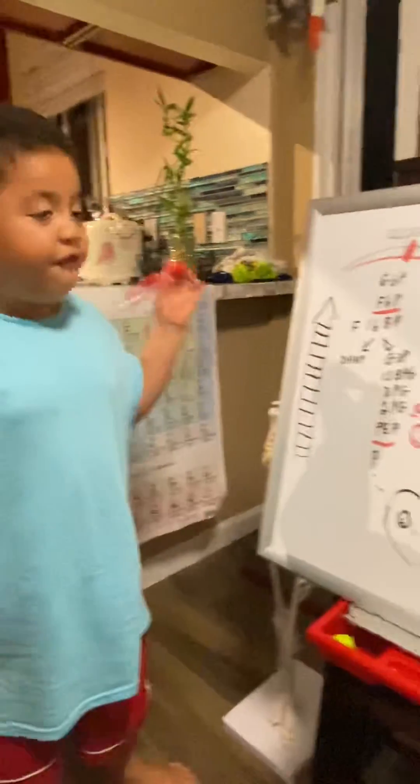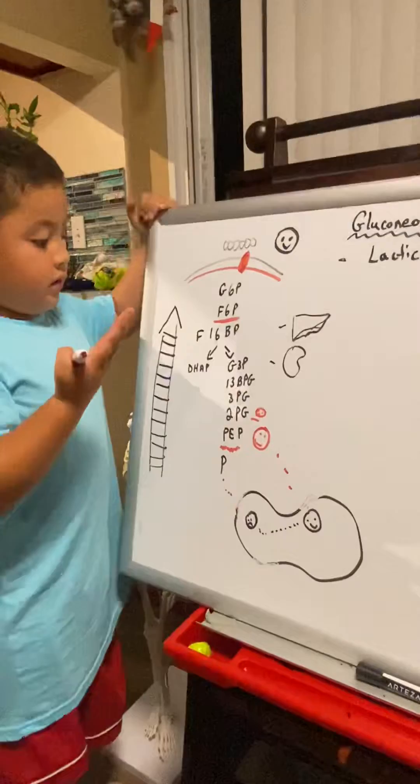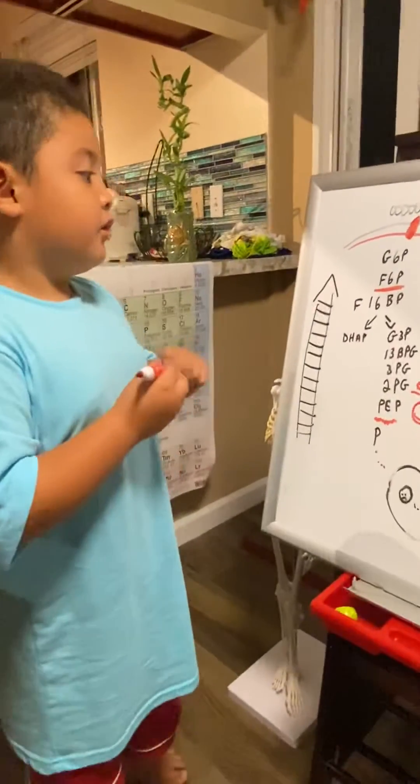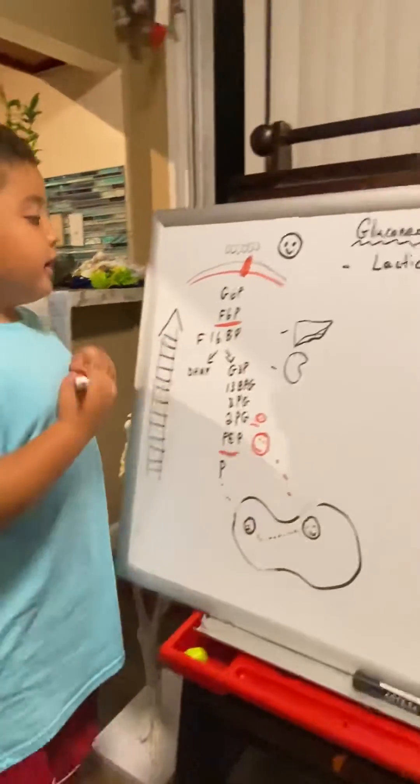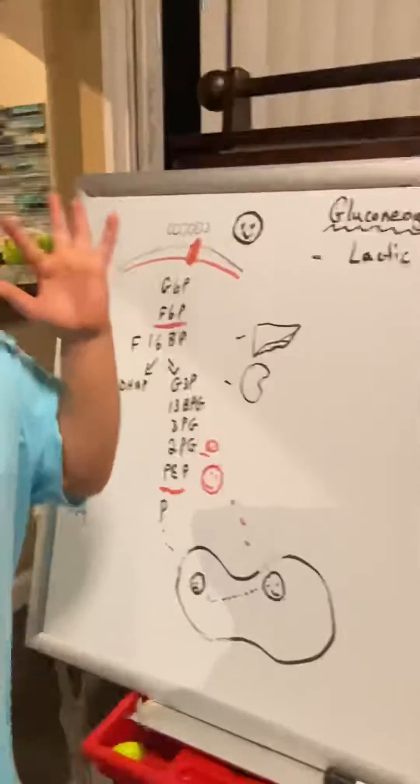Yay! It comes to 2-phosphoglycerate, comes to 3-phosphoglycerate, comes to 1,3-bisphosphoglycerate, goes to glyceraldehyde 3-phosphate, comes to fructose 1,6-bisphosphate. It can't go to fructose 6-phosphate, there's a stop sign here. See it?